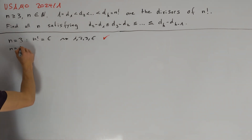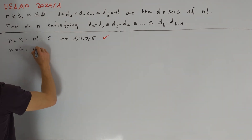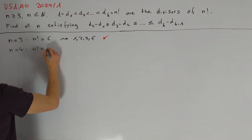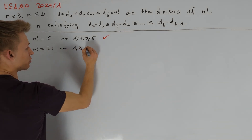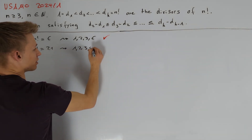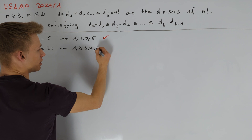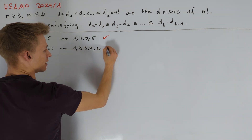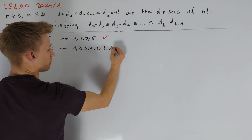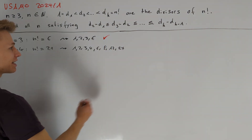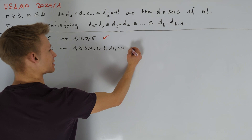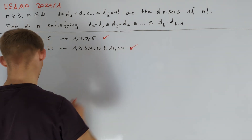Now let's take a look at n equals 4. Here n factorial equals 24 and we get the divisors 1, 2, 3, 4, 6, 8, 12, and 24. We again see that this is a solution.